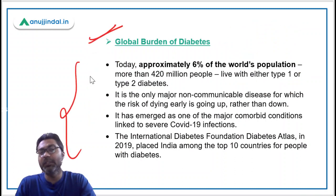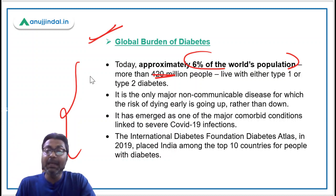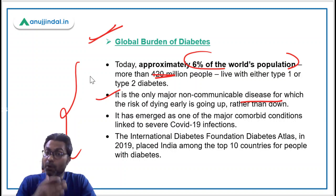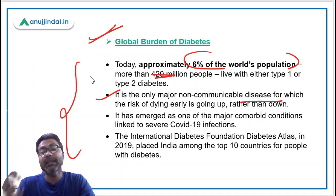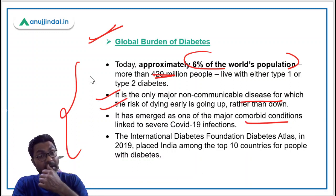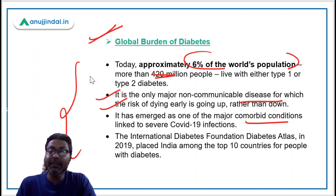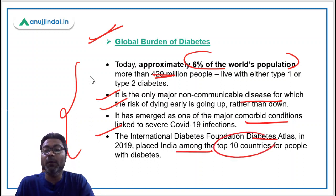Regarding the global burden of diabetes, approximately 6% of the world population — around 420 million people — are suffering from either type 1 or type 2 diabetes. It is the only major non-communicable disease for which the risk of dying early is increasing. It has also emerged as one of the major co-morbid conditions linked to severe COVID-19 infections. The International Diabetes Foundation placed India among the top 10 countries for people with diabetes in 2019.